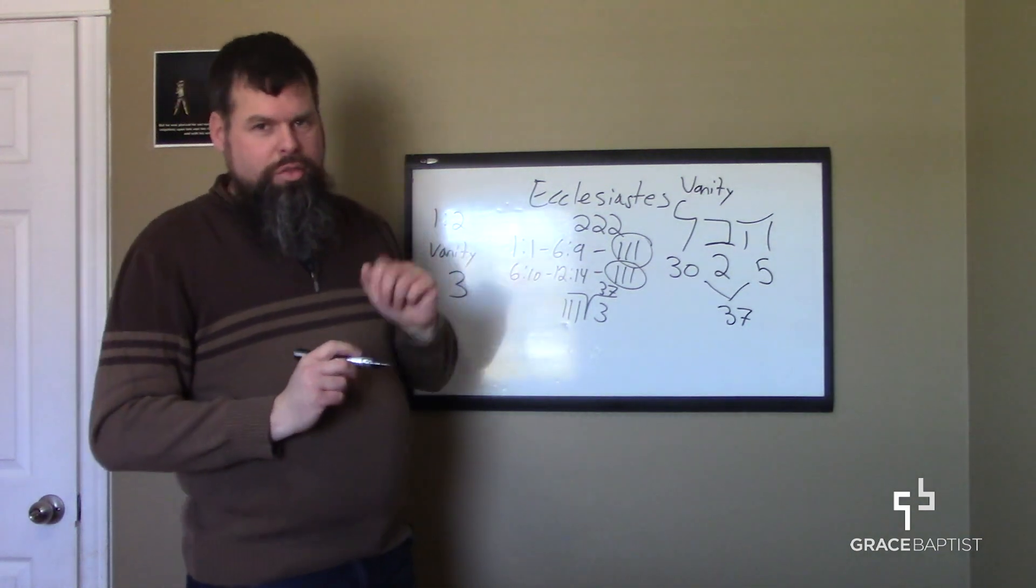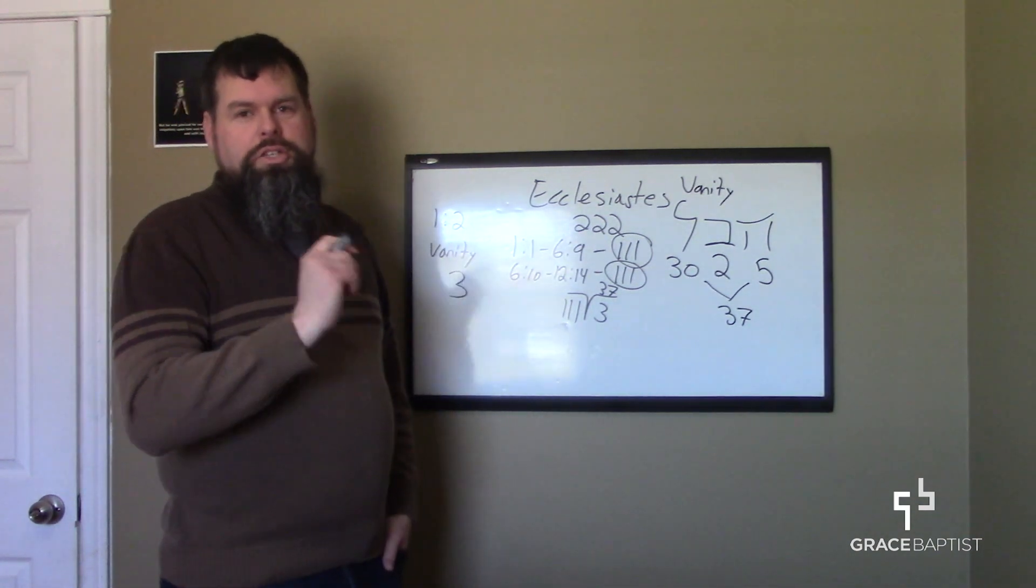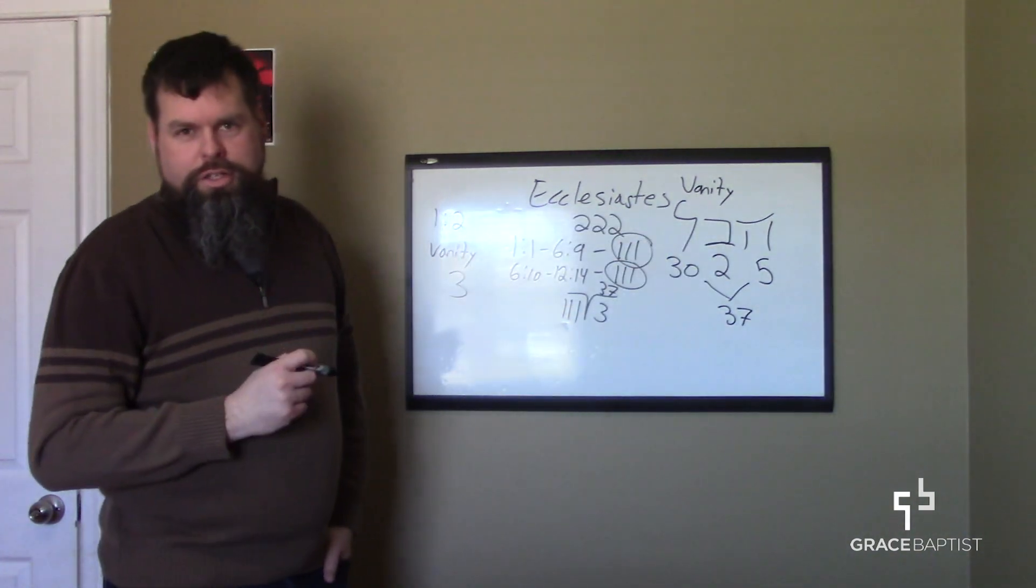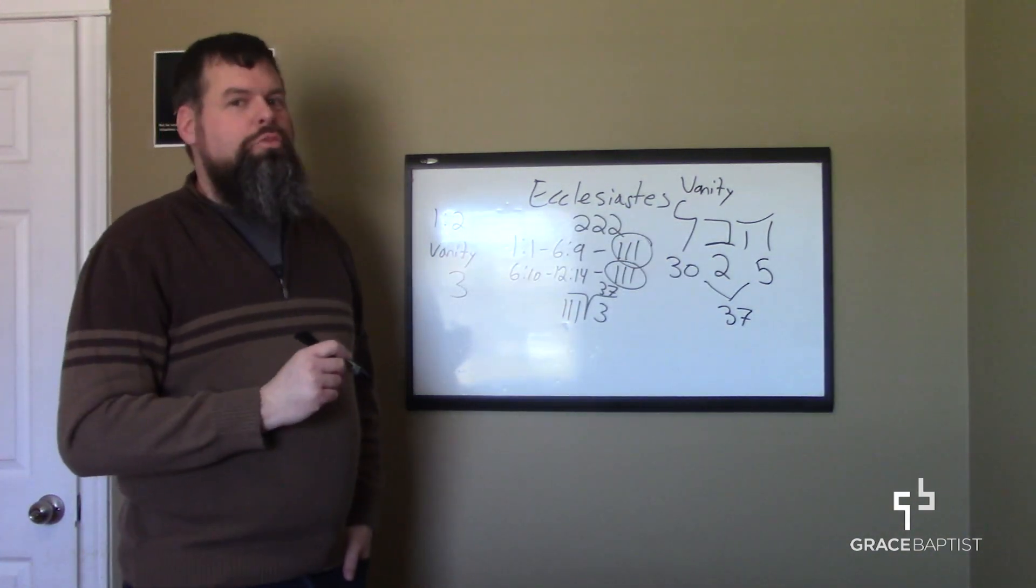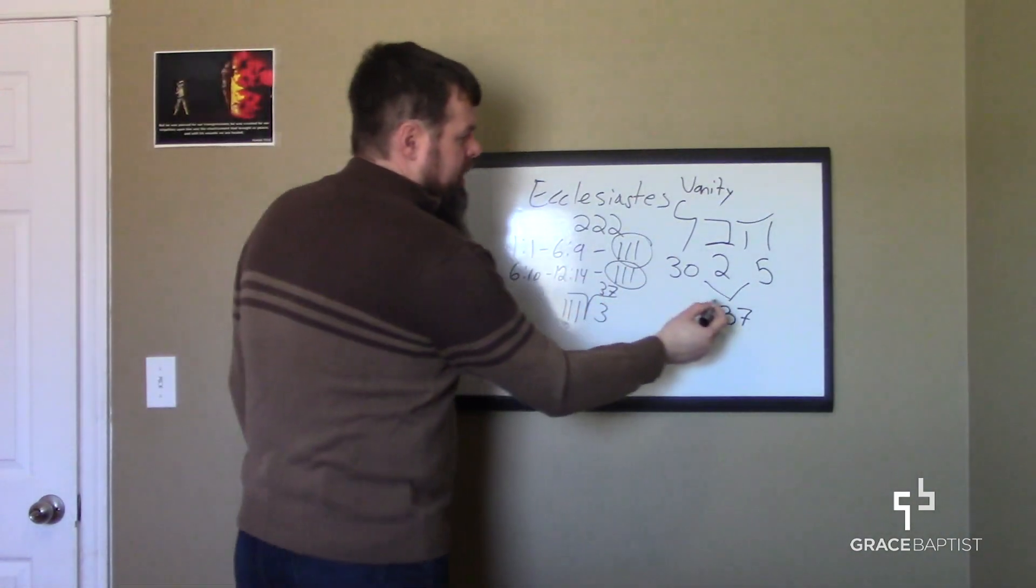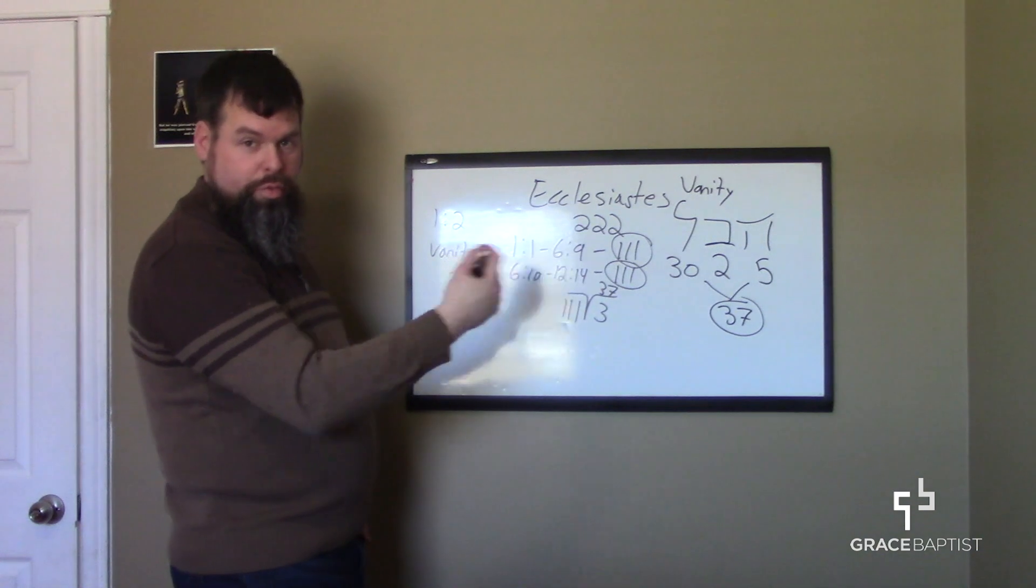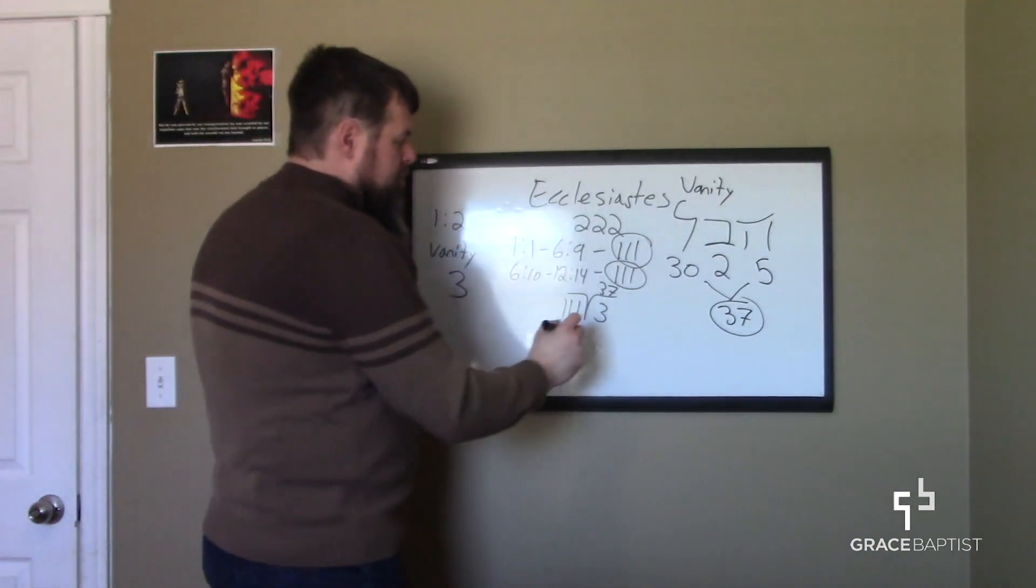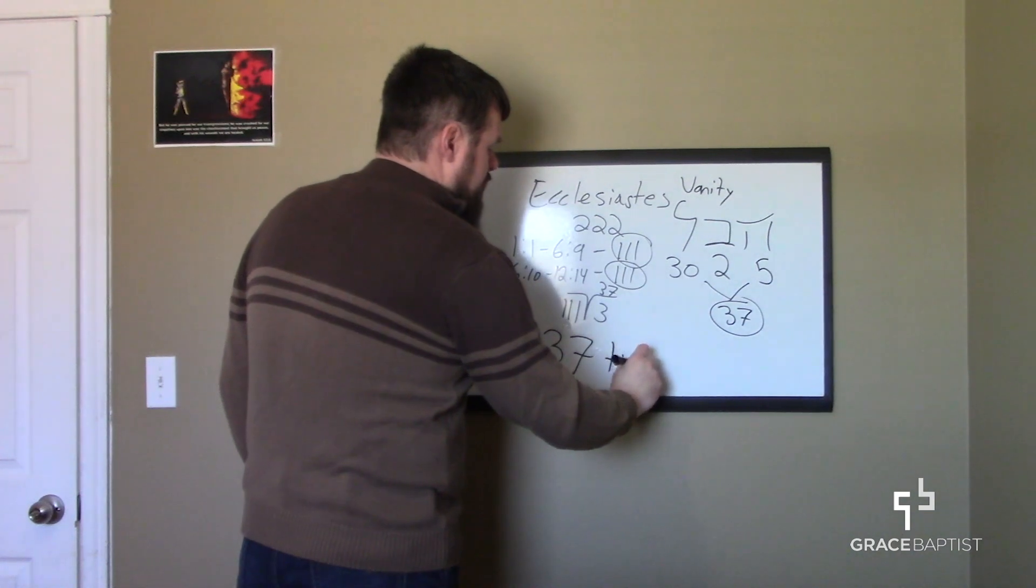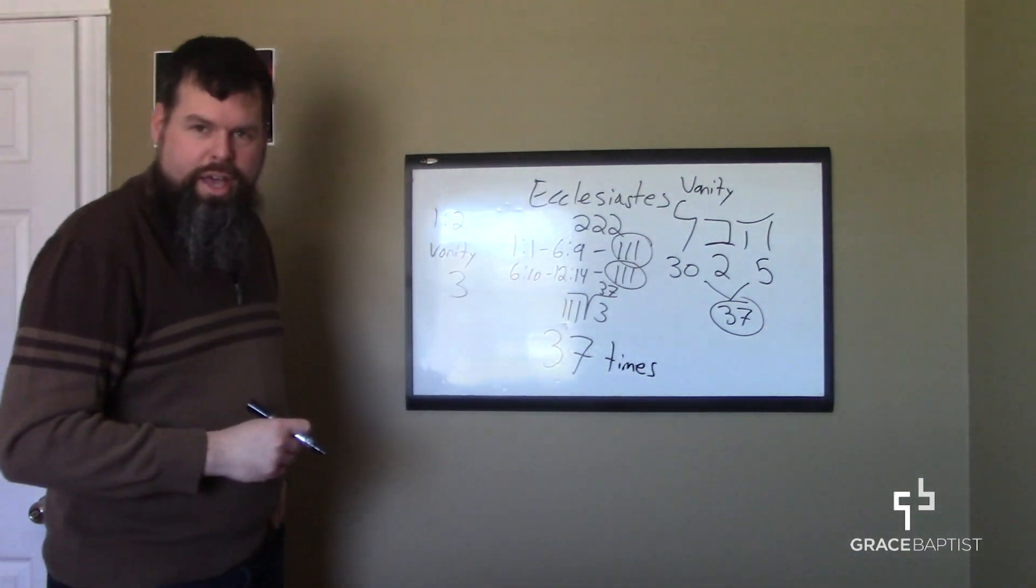Now, one final thing to kind of blow your mind. Just take a guess how many times this word appears in the book of Ecclesiastes. I think I've already told you in previous sermons, but it's kind of cool. This word then not only has the numerical value of 37 itself from the three letters that comprise it, but it's actually used 37 times exactly in the book of Ecclesiastes.